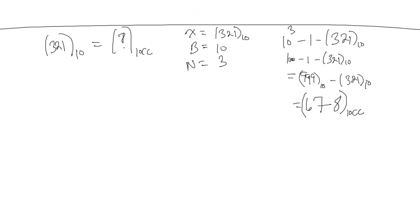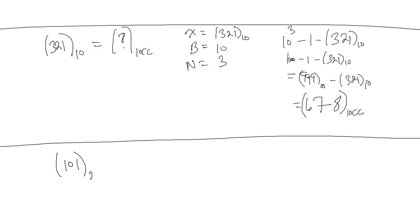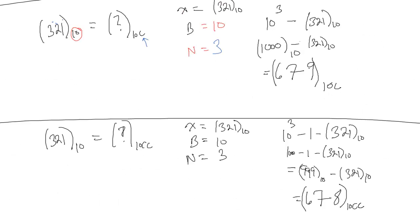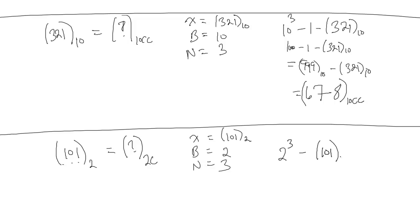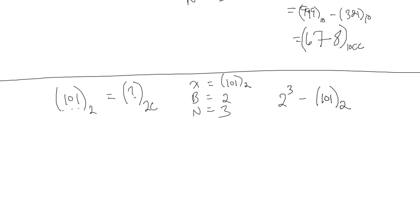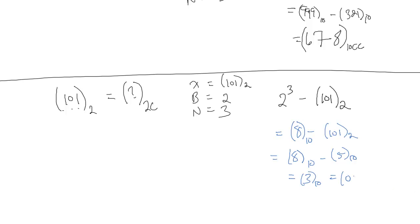Let's do two more examples with binary. What is 101 binary in 2's complement? Our inputs: x = 101 base 2, b = 2, n = 3. Using the complement formula (b^n minus x): 2^3 minus 101 base 2, which is 8 minus 5 in base 10, equal to 3 in base 10. Converting to binary gives us 011 base 2. I put a leading 0 to keep the same number of digits as the original.